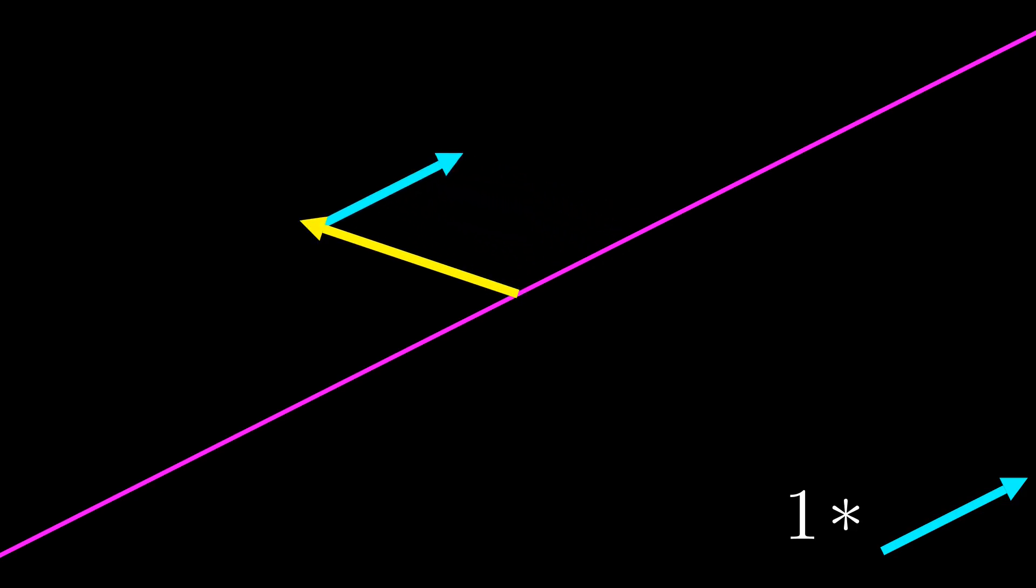But what if we have a second vector that we add on to the results of scaling the first vector? We get a new line of possibly obtainable vectors, shifted from the first line by the second vector.